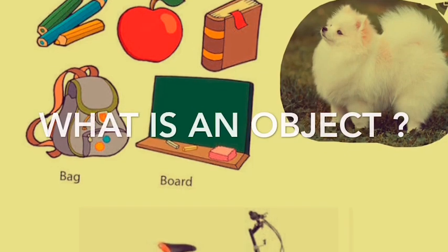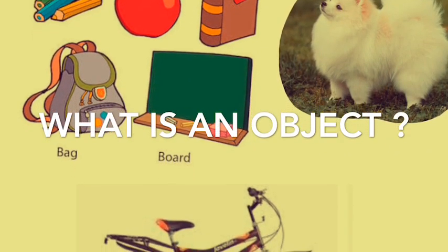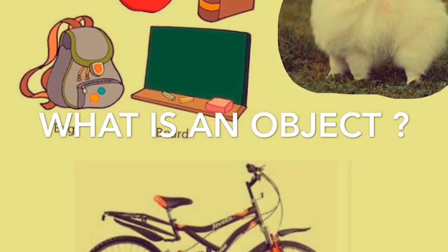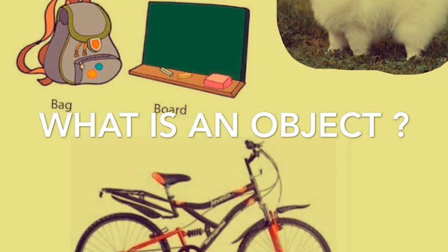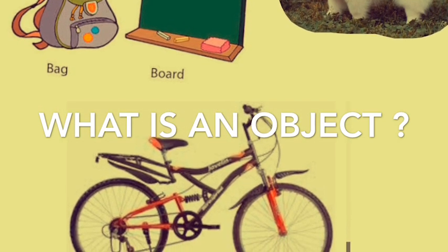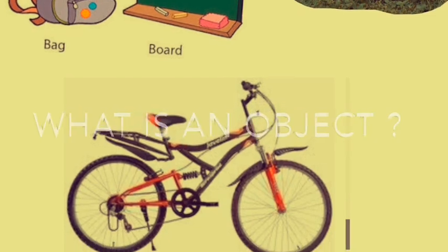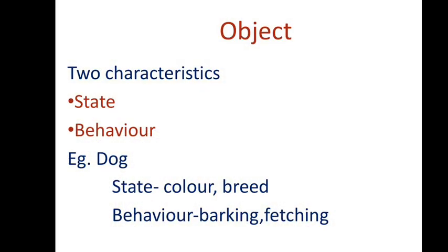Now let's see what is an object. We see many examples of real world objects around us like our mobile, laptop, desk, dog, bicycle, etc. These real world objects share two characteristics: they all have a state and a behavior.